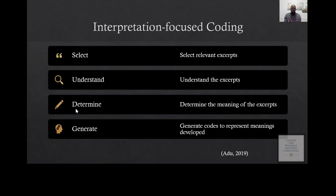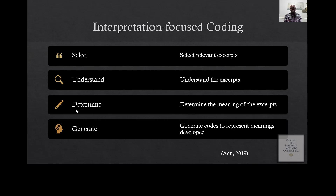Interpretation-focused coding is about making sense of the participant information. You go to the transcript, select significant information, make sure you understand it, and ask yourself: what does this information mean? Based on the meaning of the information, you generate a code to represent that excerpt.